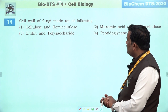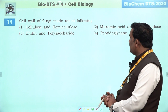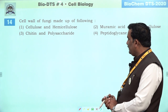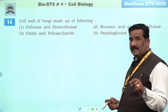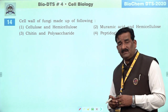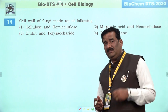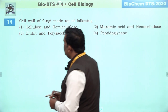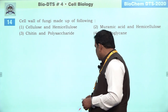Next question: cell wall of fungi made up of following. Cell wall jo fungus ki hai, usmein main component ka — polysaccharide ki presence maani gai hai. Muramic acid obviously prokaryote ka character hai — fungus is not a prokaryote. Peptidoglycane are also present in prokaryote organism. Yeh sahi hai ki cellulose kuch ek fungus mein lower mein paaya jaata hai, but more appropriate answer is third. Third is right.